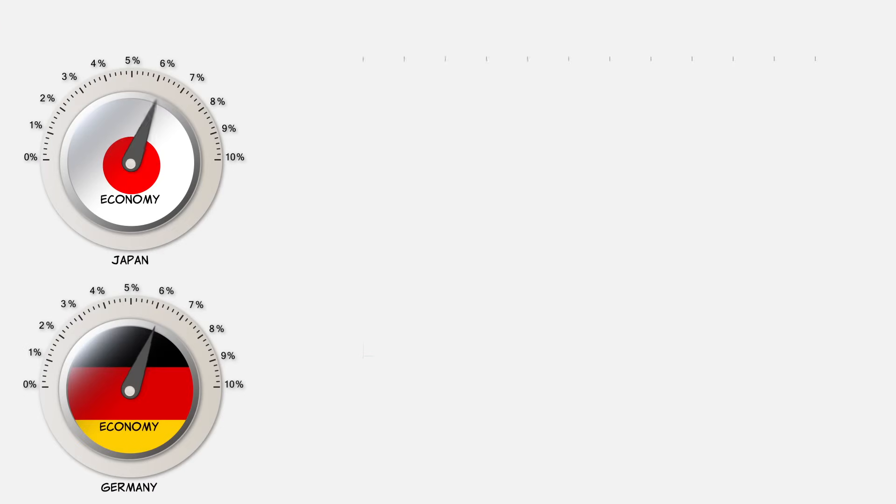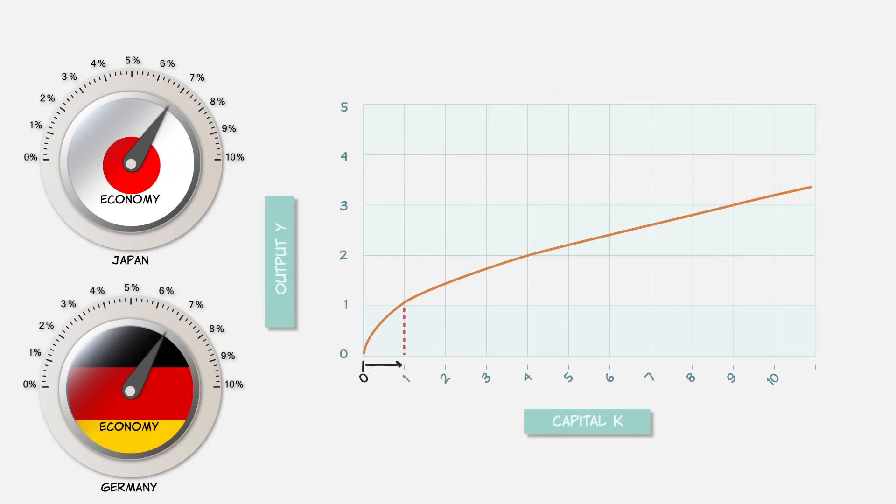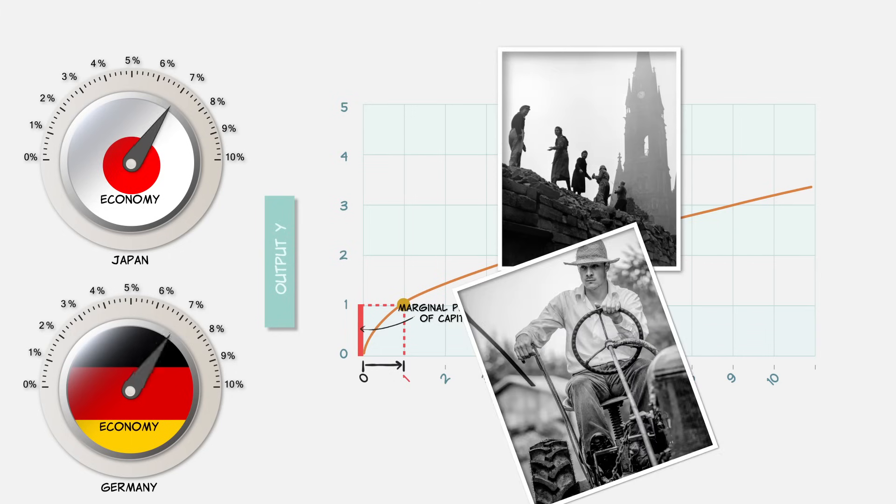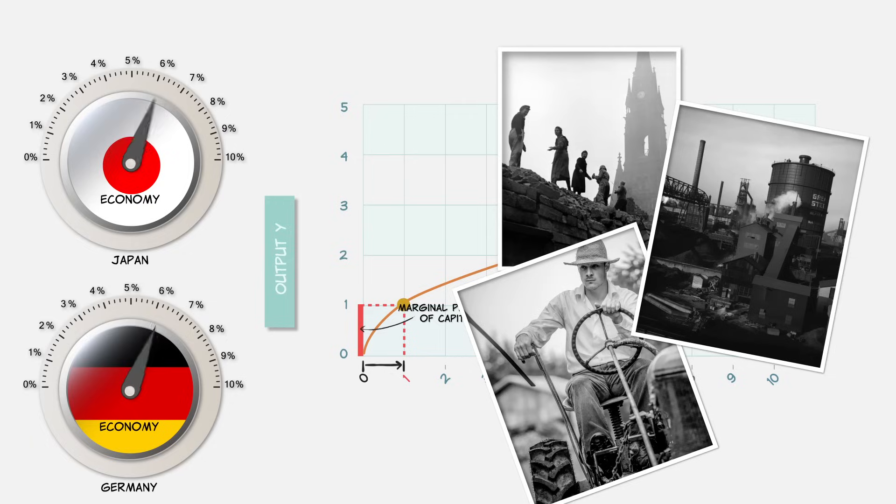Already, we can explain one of our puzzles. Recall that growth was fast in Germany and Japan after World War II. That makes sense, because after the war, those countries didn't have a lot of capital. So that meant that the first units of capital had a very high marginal product. The first road between two cities, or the first tractor on a farm, or the first new steel factory, that gets you a lot of additional output.